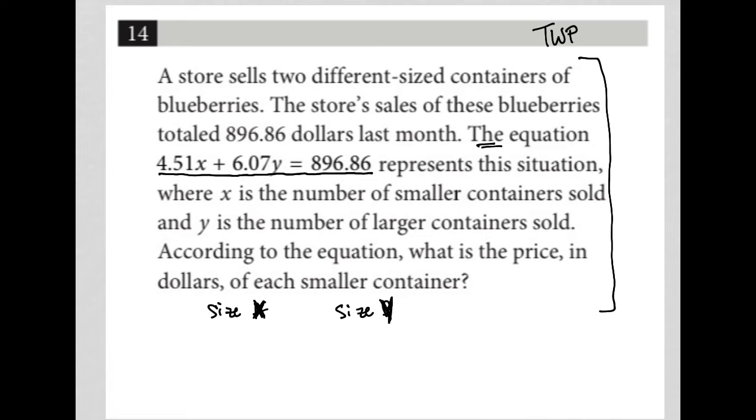So I'm going to write down the equation as well: 4.51X plus 6.07Y equals 896.86, where X is the number of smaller containers sold and Y is the number of larger containers sold.